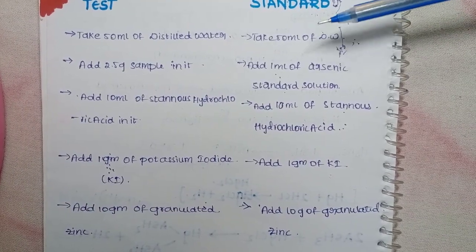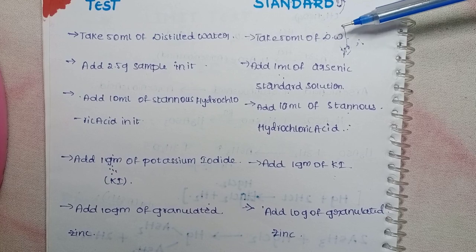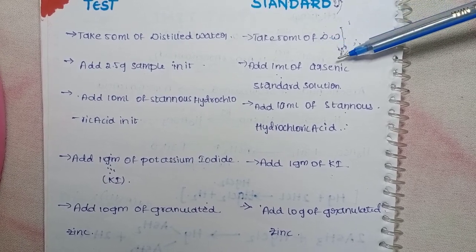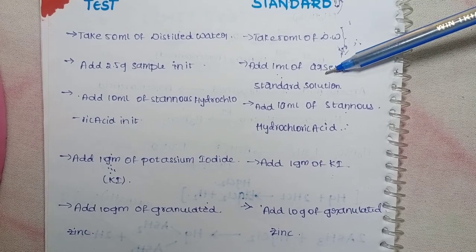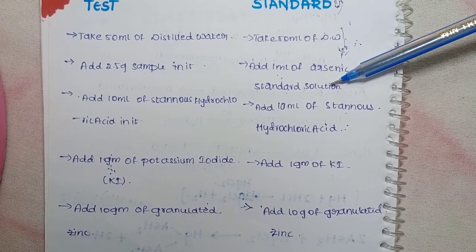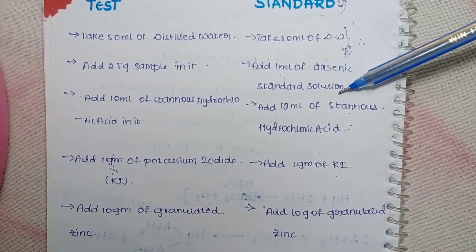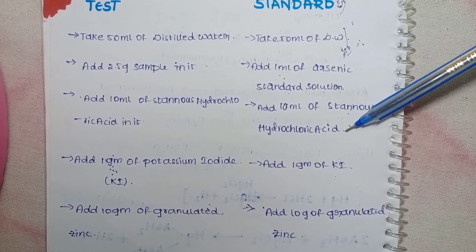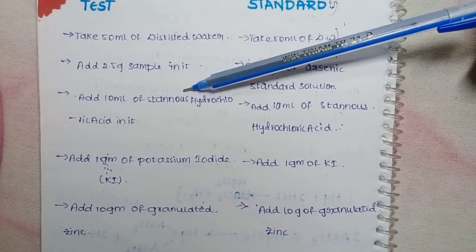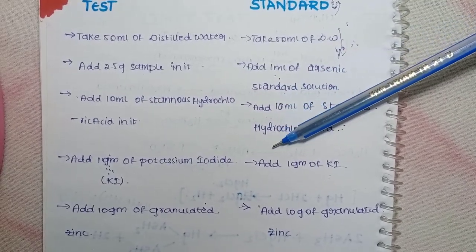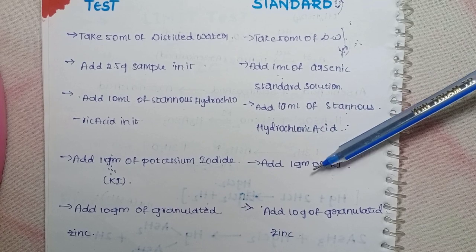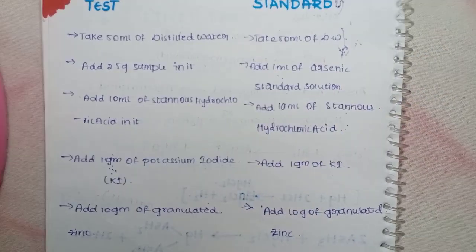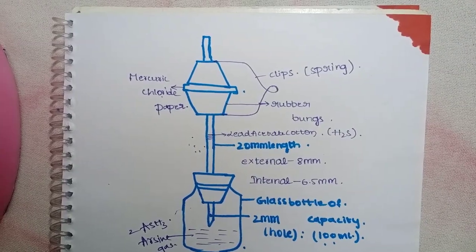For preparation of the standard: take 50 ml of distilled water and add 1 ml of arsenic standard solution. Then add 10 ml of stannous hydrochloric acid, same as in the test. Add 1 gram of potassium iodide and 10 grams of granulated zinc, same as the test, and leave it for the reaction to occur.